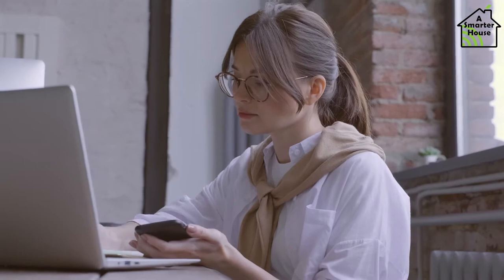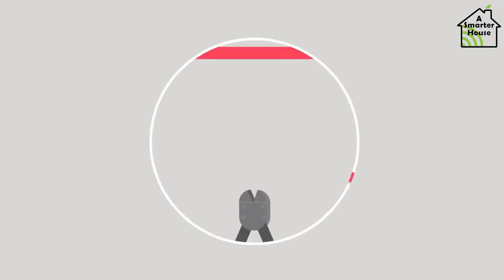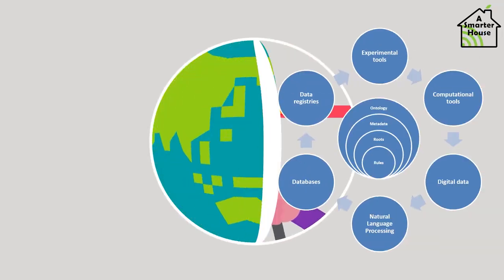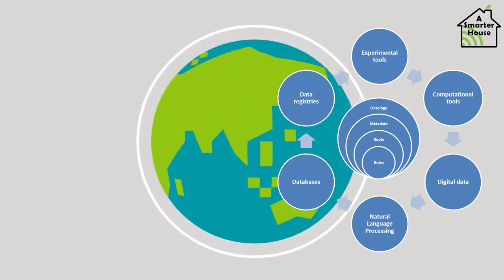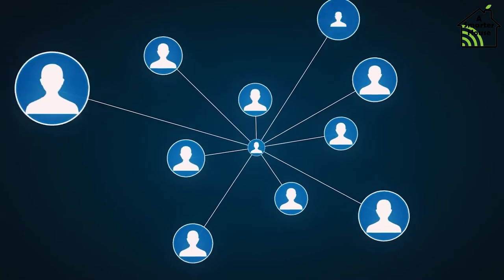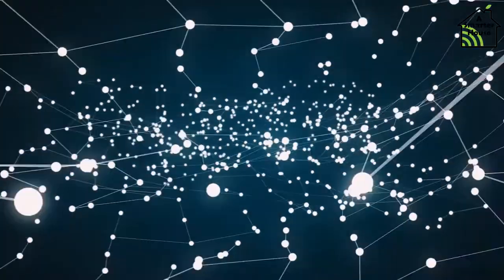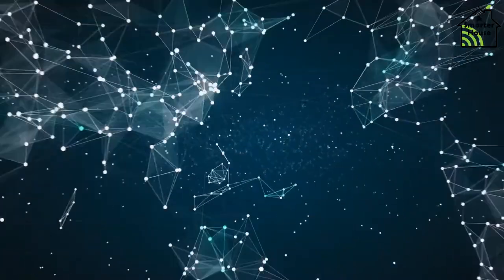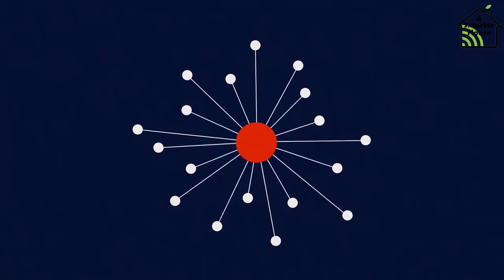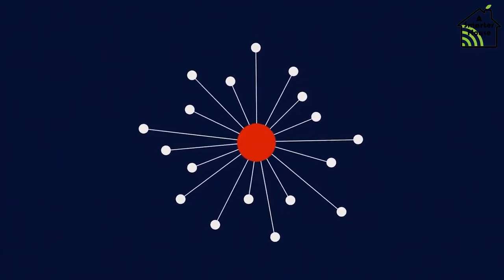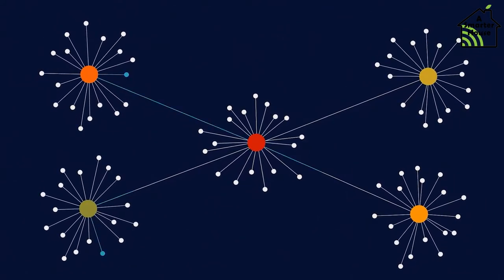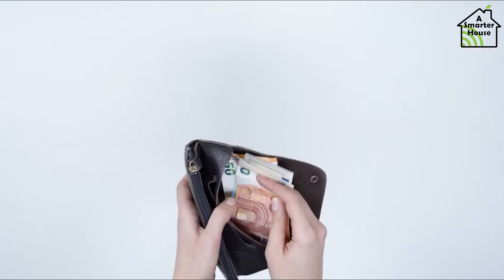Cons of Zigbee: Zigbee technology is highly susceptible to network interference due to network overload and channel noise. Because Zigbee is designed for low-rate data transmission, the technology has a low bitrate. There are numerous security risks associated with Zigbee technology. The size and range of the network influence the cost of Zigbee deployment, which can be expensive.